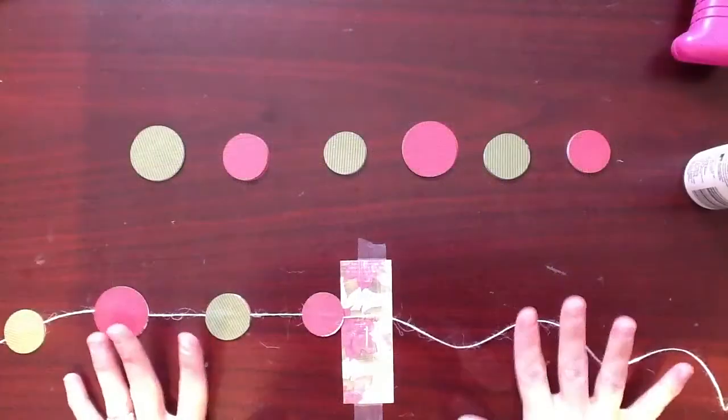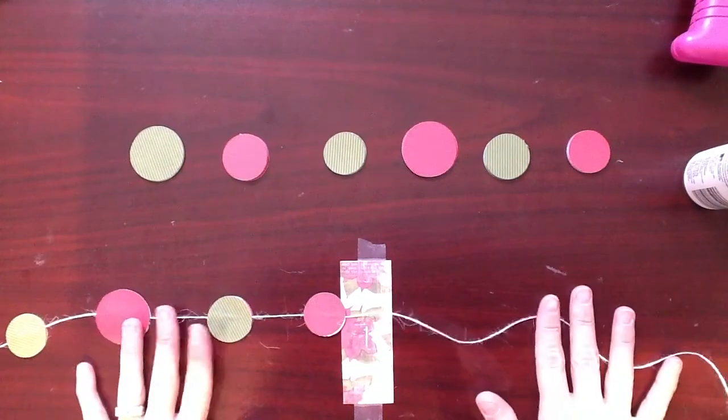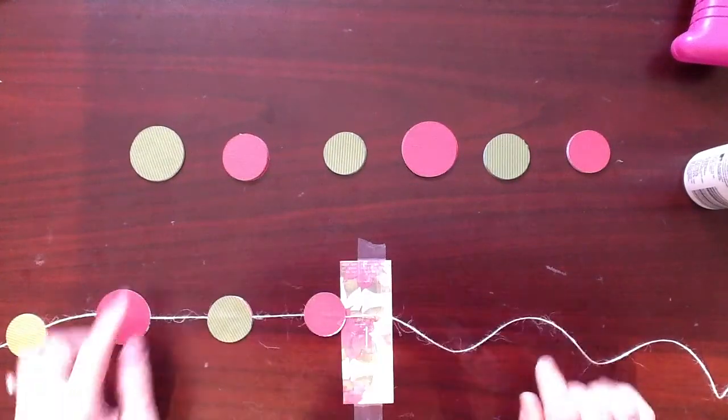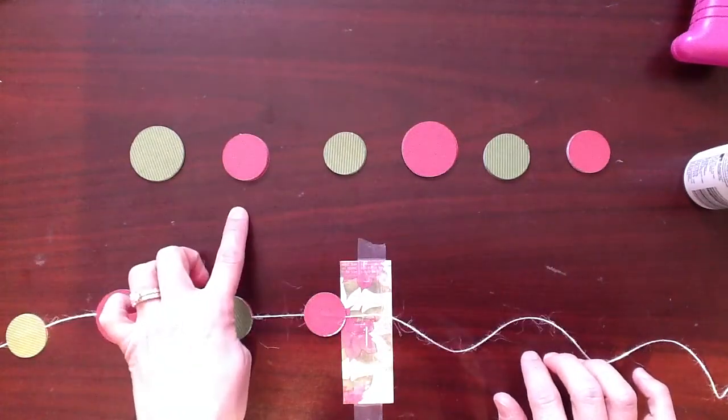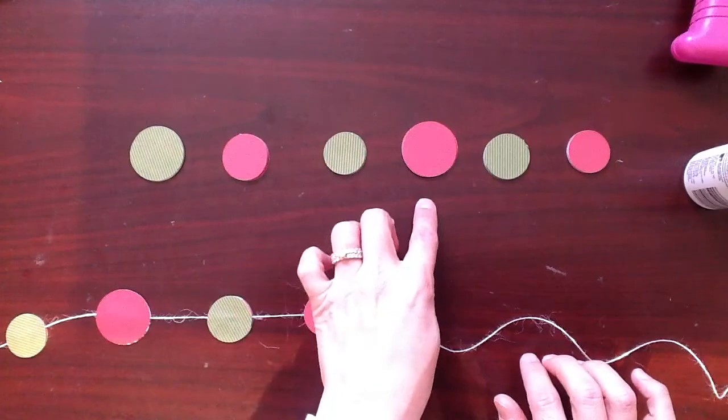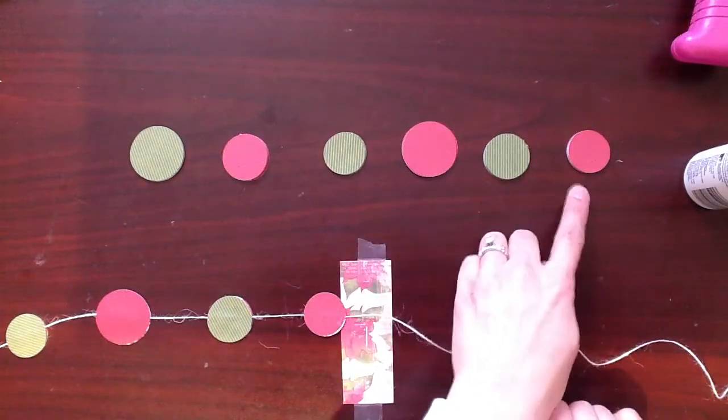Okay, so now we're in the process of actually creating the garland. I have all my circles lined up, and then I've organized them so they make a pattern. The big green, the medium red, the small green, the big red, the medium green, the small red.